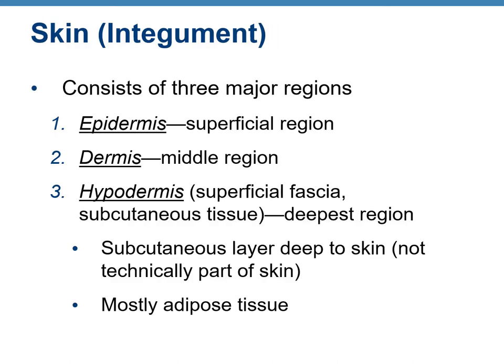The skin or integument consists of two major groups — not three. Hypodermis is not technically part of the skin. The two major groups are: epidermis (superficial region) and dermis (deep region). The hypodermis, or superficial fascia — subcutaneous tissue — is a layer under the dermis, mostly adipose tissue, and it shares some functions with the dermis.